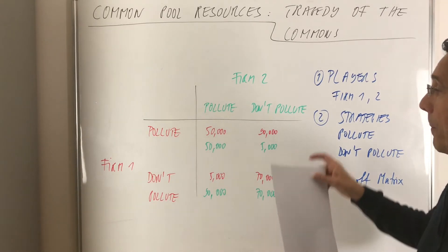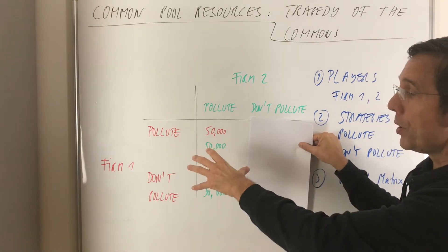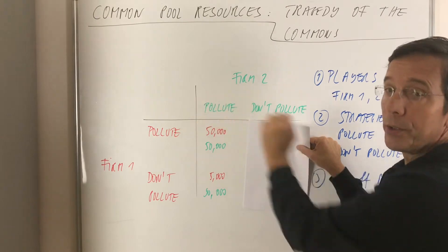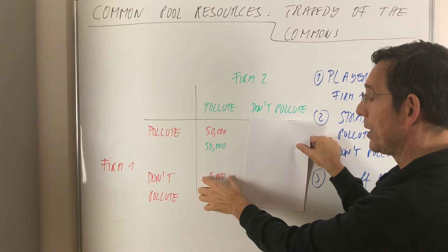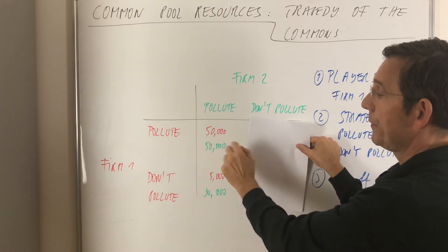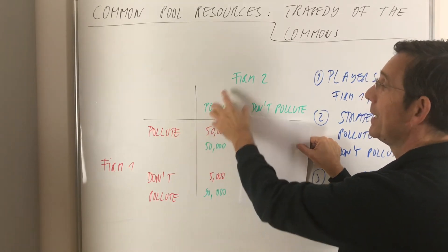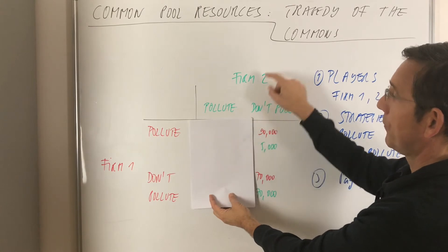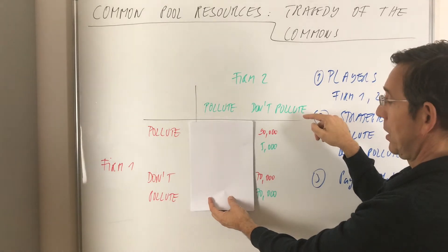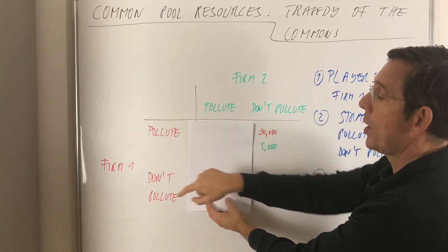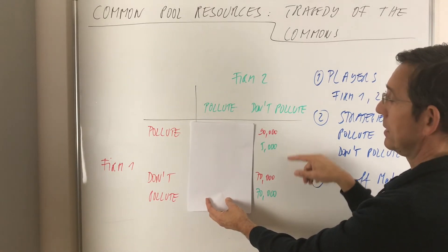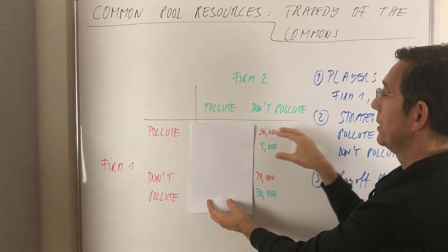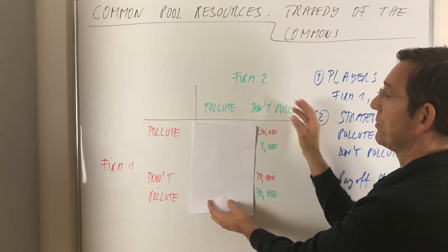Now think of firm 1. What is the best response of firm 1, given that payoff matrix, if firm 2 chooses strategy pollute? You see here in red the payoff is 5,000 versus 50,000 — so firm 1 chooses to pollute if firm 2 pollutes. Now assume firm 2 chooses the strategy not to pollute: 70,000 is less than 90,000, so 90,000 is the payoff in case of pollution. So firm 1's best response to both strategies is to pollute.